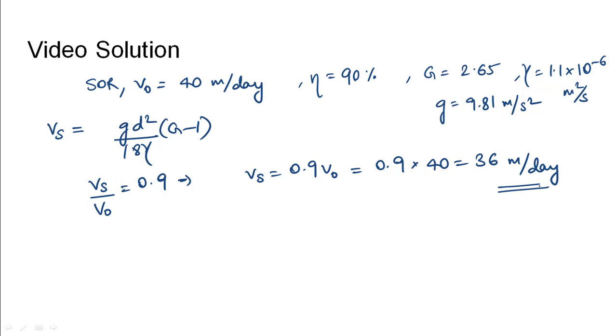Converting to meters per second: 36/86,400 m/s. Setting up the equation: 36/86,400 = (9.81×d²)/(18×1.1×10⁻⁶)×(2.65-1).